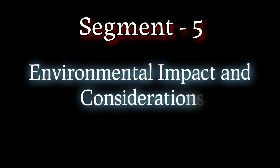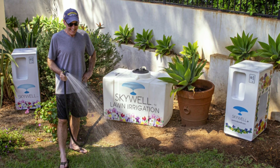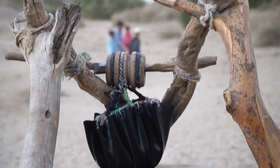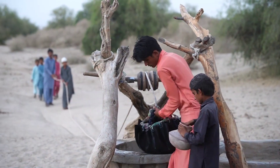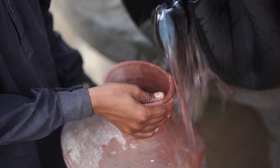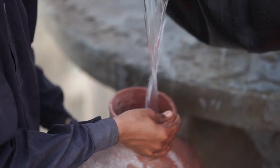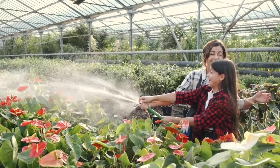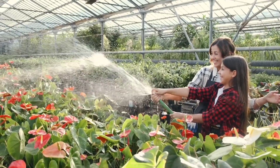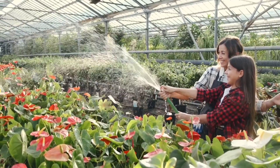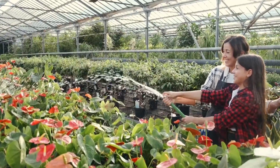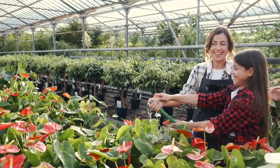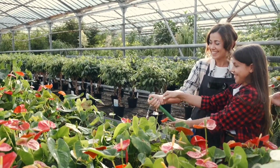Using AWGs can have positive environmental impacts as well. By generating water locally, we can reduce the need for long-distance water transportation and minimize the strain on natural water sources. However, it's essential to maintain a balance in humidity levels. Extracting too much moisture from the air could have unintended consequences, affecting the local ecosystem and climate patterns.